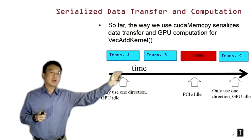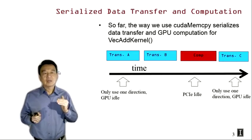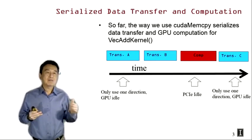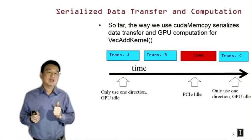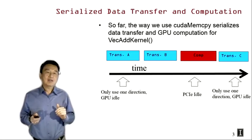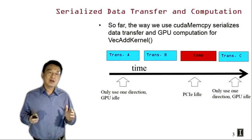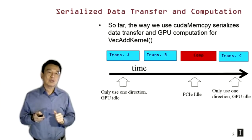The second part is the compute part — the execution of the kernel. During this time, the GPU streaming multiprocessors will be busy, but the PCI bus will be idle in both directions. And then finally, when we transfer the C vector back from device to host, we will only be using the device-to-host direction of the PCI bus, and the GPU streaming multiprocessors will be idle. So if we look at this timeline, it becomes clear that at any point in time we are actually only using about one third of the system resources, accounting for the PCIe in each direction and the streaming multiprocessors in the GPU.